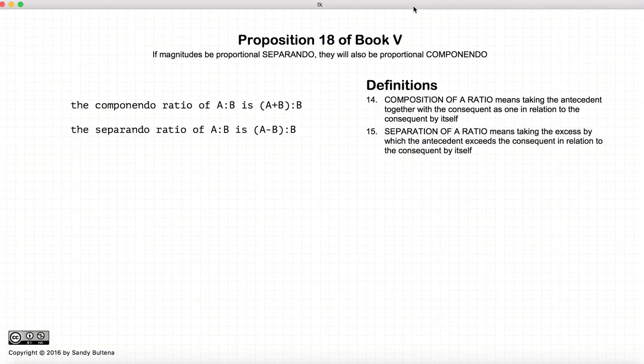Before we begin, a couple definitions. The componendo ratio of A to B is A plus B compared to B. The separando ratio of A to B is A minus B to B. Alright, so these are just two definitions.